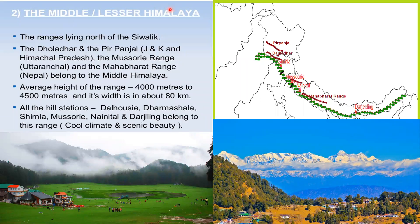To the south of Himadri, we have the Lesser Himalaya or Middle Himalaya. These ranges lie to the north of the Shivalik range — the Dhauladhar and Pir Panjal in Jammu and Kashmir, the Mussoorie Range, and the Mahabharat Range all belong to the Middle or Lesser Himalaya. The average height is 4000 to 4500 meters, and the width is about 80 kilometers. Famous hill stations like Dalhousie, Dharamsala, Shimla, Mussoorie, Nainital, and Darjeeling belong to this range. This range also has important pilgrimage centers like Kedarnath, Amarnath, and Vaishno Devi temple.